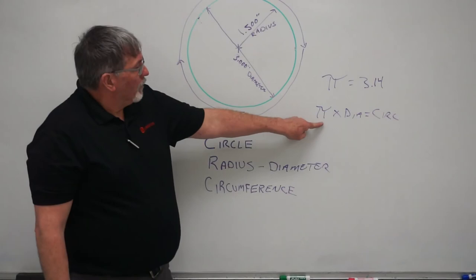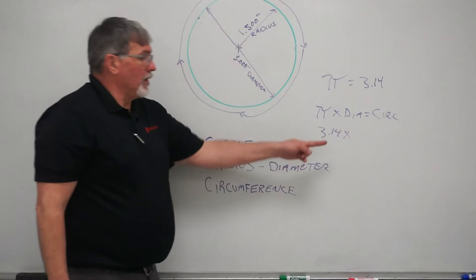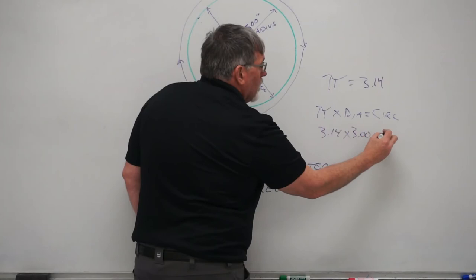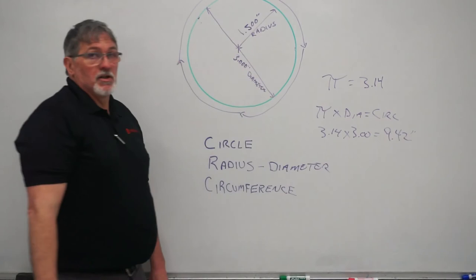So to calculate our circumference of this circle, it's going to be pi times the diameter equals circumference. So pi is 3.14. Our diameter in this circle is going to be 3 inches. So our circumference is going to equal 9.42 inches.